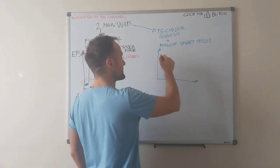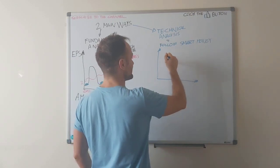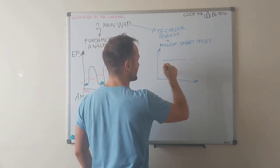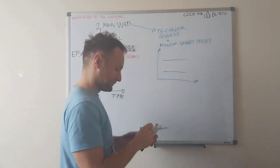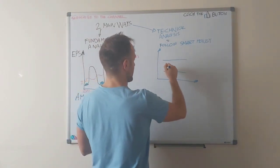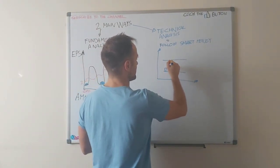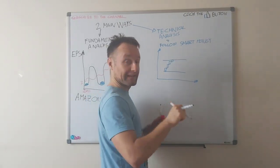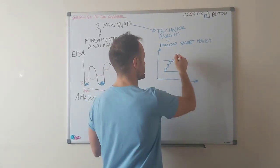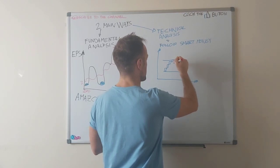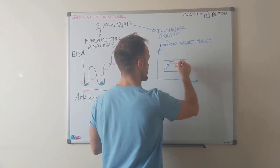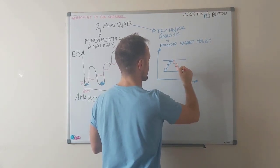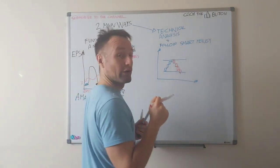For example, we have a stock and the stock price, let's imagine that is stuck in a channel like that. And we got some green candles. Then we get some red candles. Something like that.